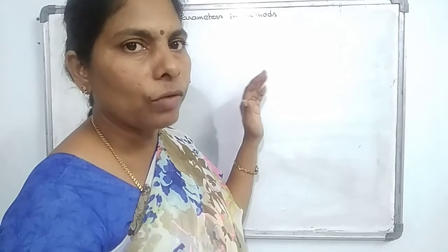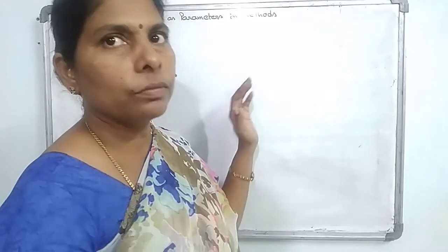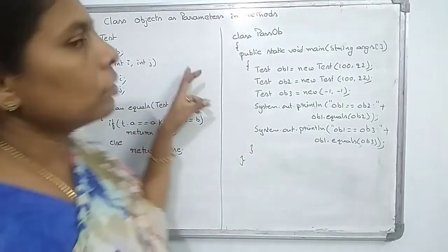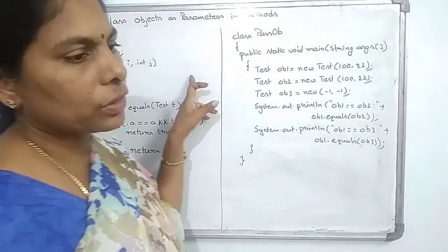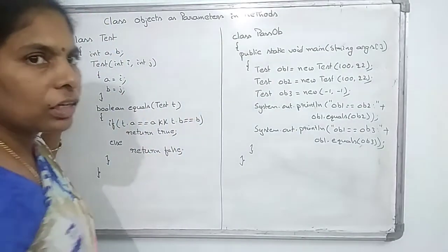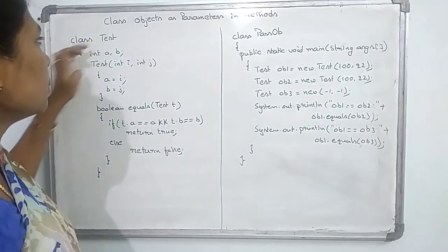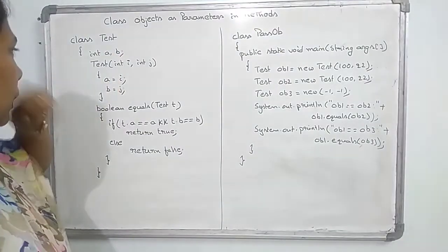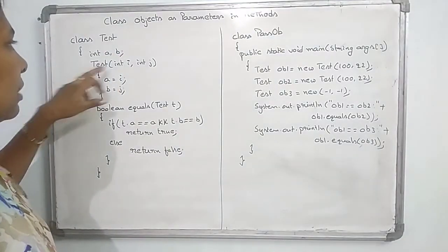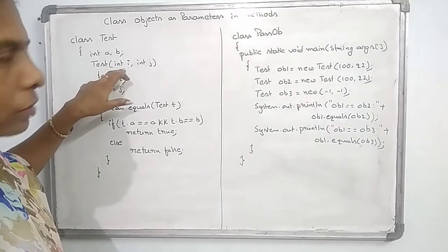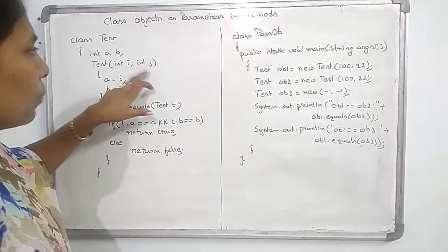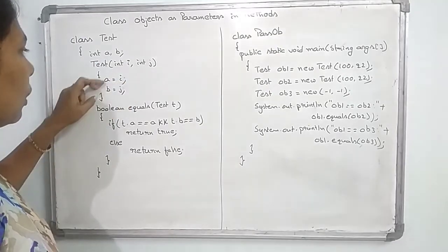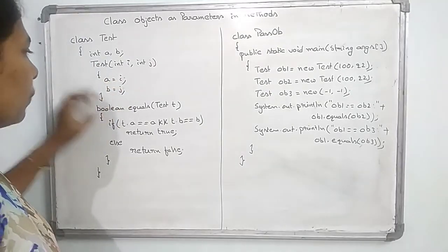Now, we will discuss this through one example — passing objects as parameters. I am taking one class called Test. In that, the variables are A and B. I am also taking a method called Test, in which I am passing two variables I and J, and assigning them to A and B: A equals I and B equals J.